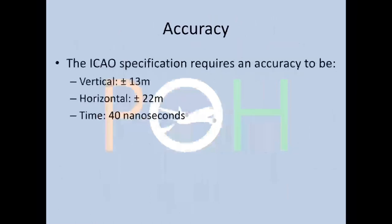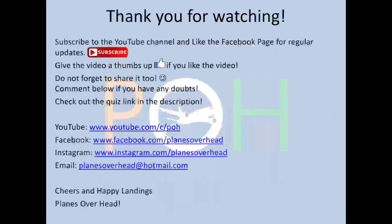The ICAO specification requires vertical accuracy of plus or minus 13 meters, horizontal accuracy of plus or minus 22 meters, and time accuracy up to 40 nanoseconds.